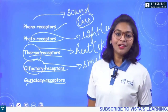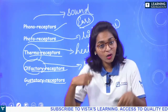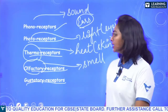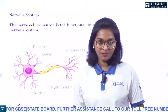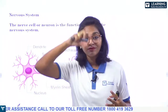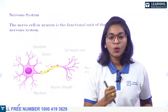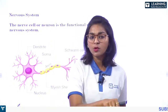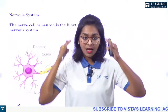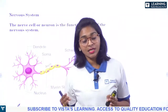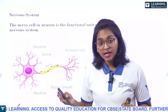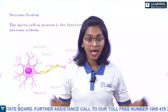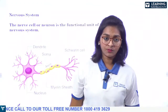These are the five major receptors: phonoreceptors, photoreceptors, thermoreceptors, olfactory, and gustatory. All these receptors must be controlled by some system. Just like digestion involves organs coming together as a system, all nerve endings are connected together, forming the nervous system.